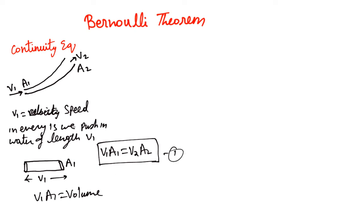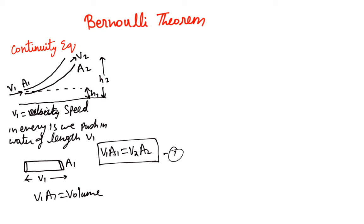One important result: if the cross-section is the same — that is, if a1 equals a2 — then v1 will equal v2. Now let's say this end is at a height h1 from the ground and the other end is at a height h2. There is one more relation we can draw from this figure.